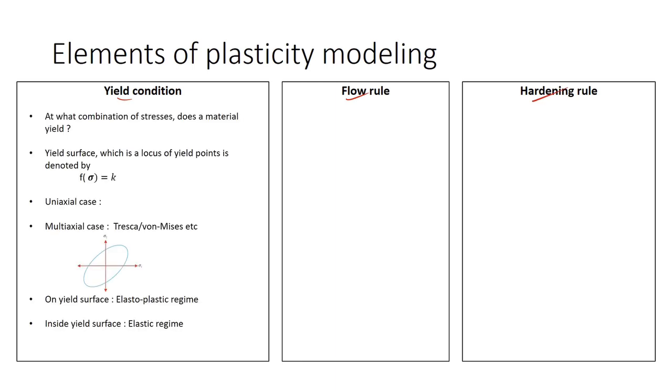The yield condition is regarding the question at what combination of stresses does a material yield. It is represented by the yield surface and it is denoted by the equation function of stress tensor equal to constant. Let me give a couple of examples. For the uniaxial case, the yield equation is just sigma 1 equal to sigma y. For the multi-axial cases, things are a bit complicated and Tresca and von Mises yield surfaces are the well-known ones.